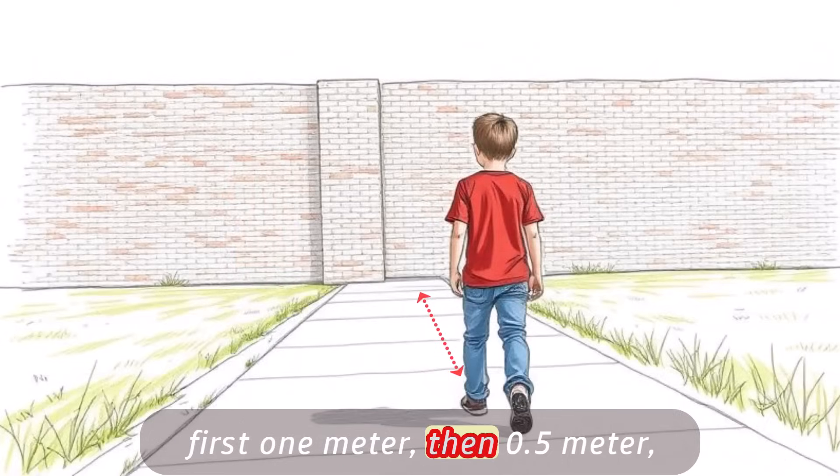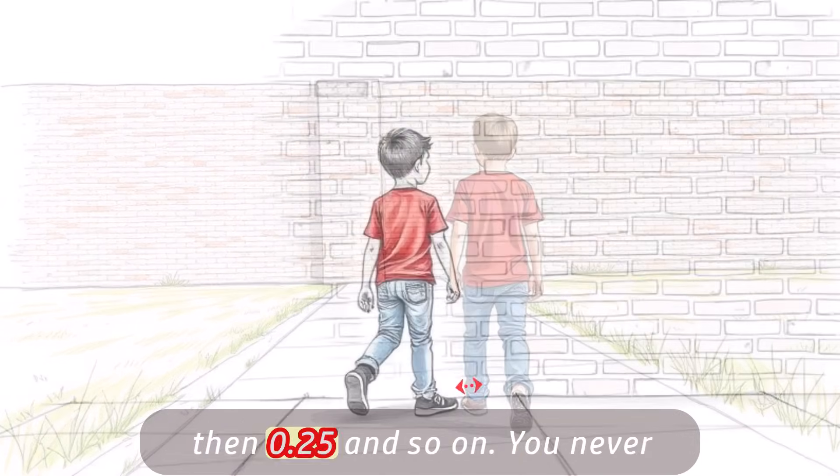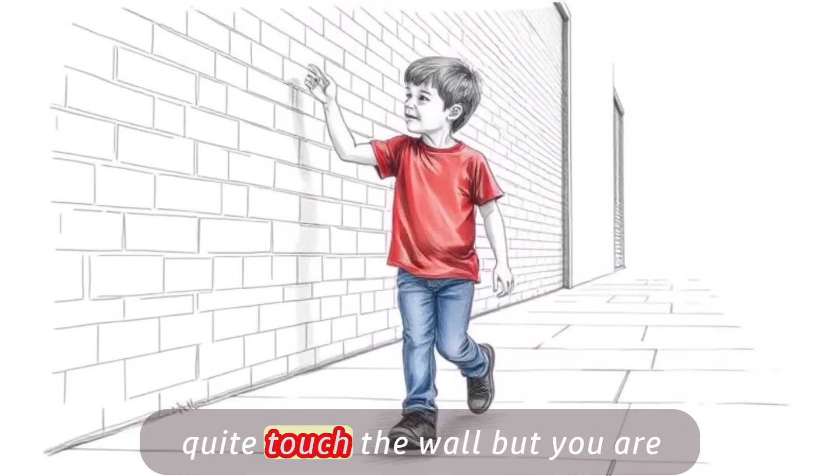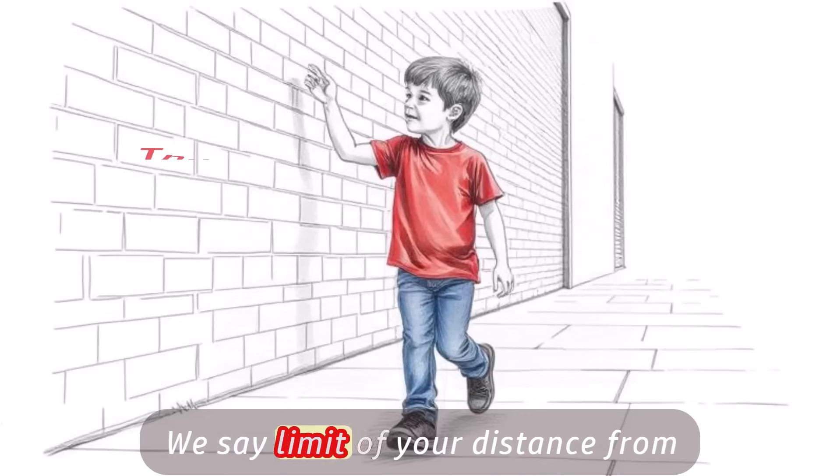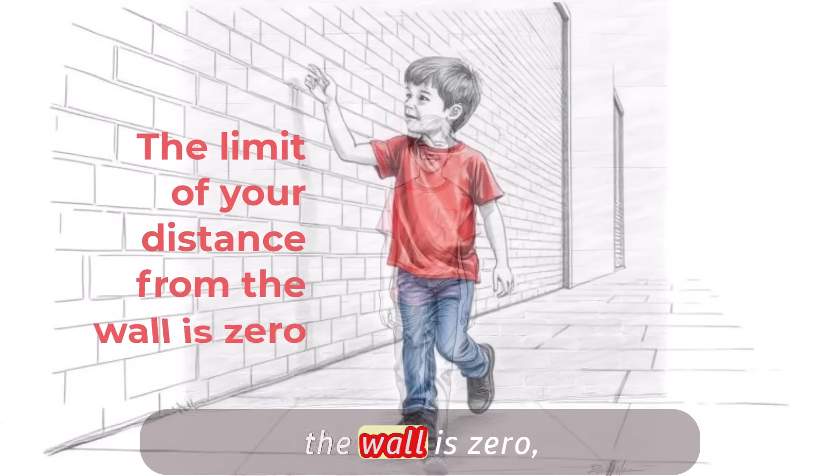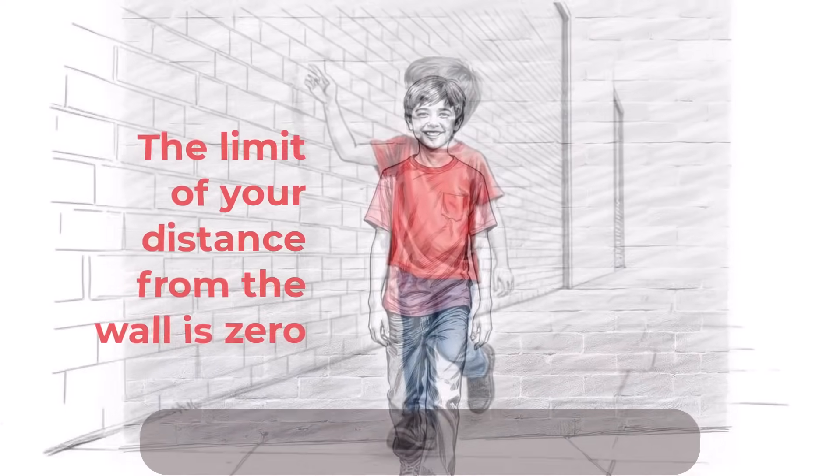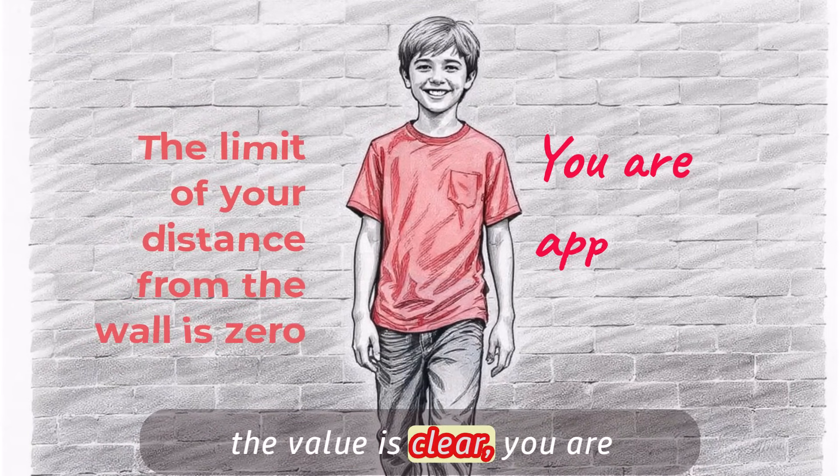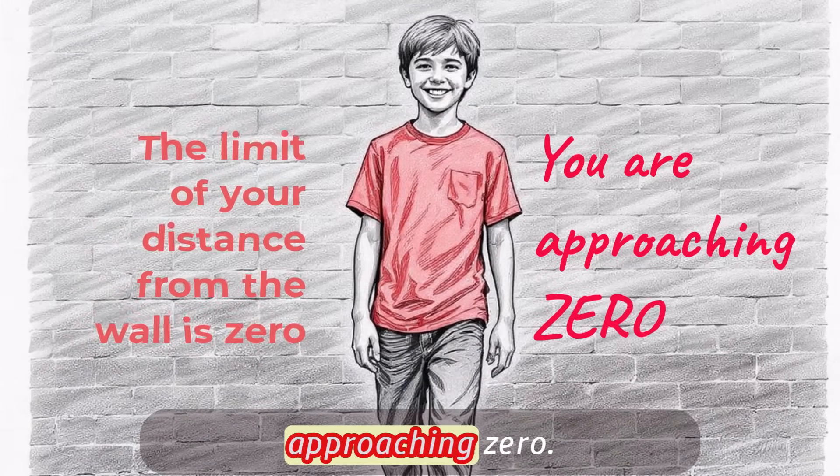First 1 meter, then 0.5 meter, then 0.25 and so on. You never quite touch the wall, but you are getting closer and closer. We say the limit of your distance from the wall is 0. Even though you never reach it, the value is clear. You are approaching 0.